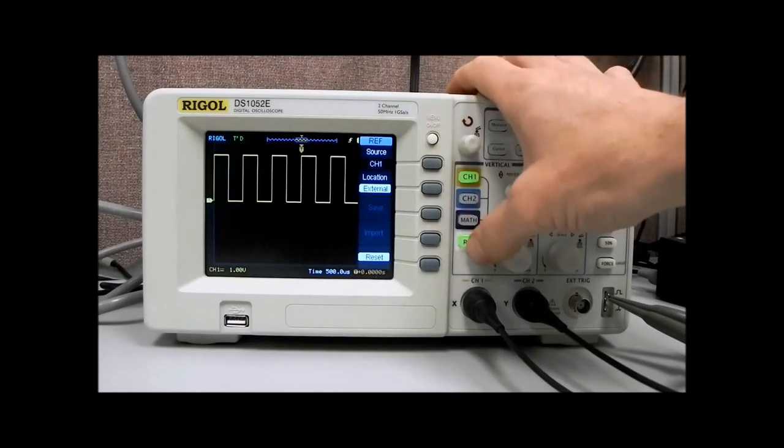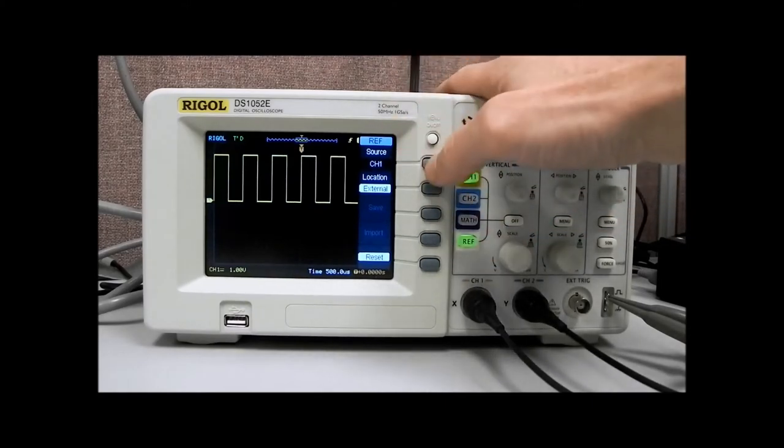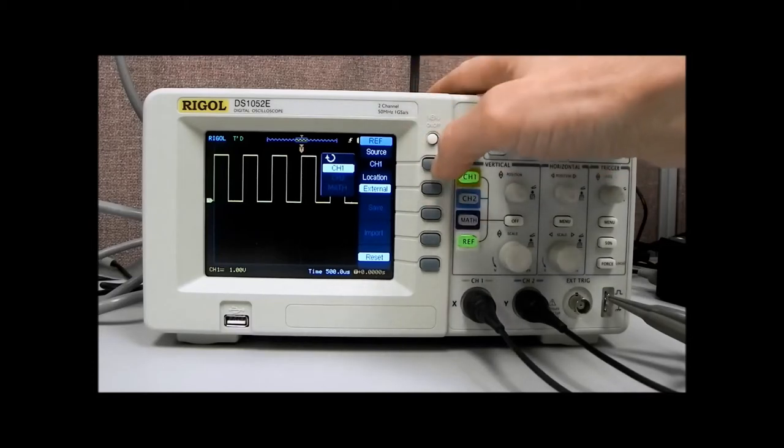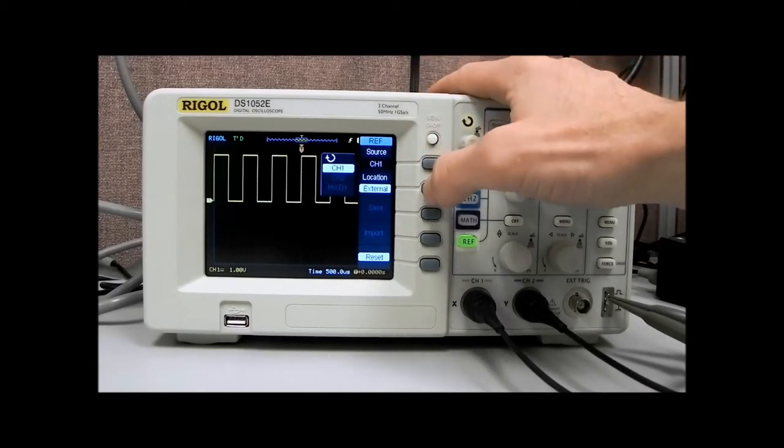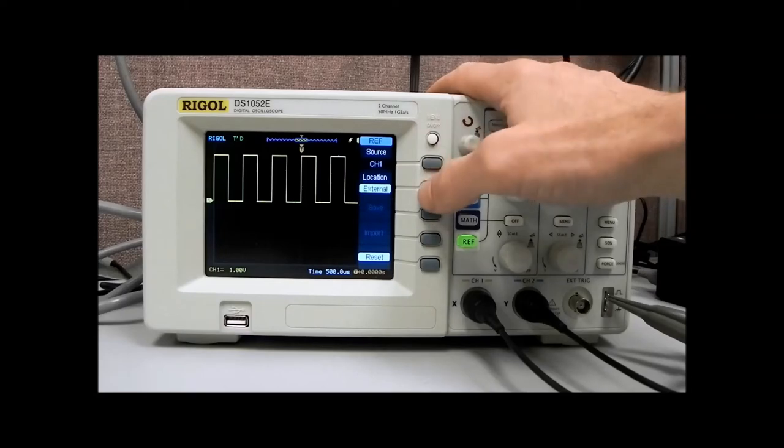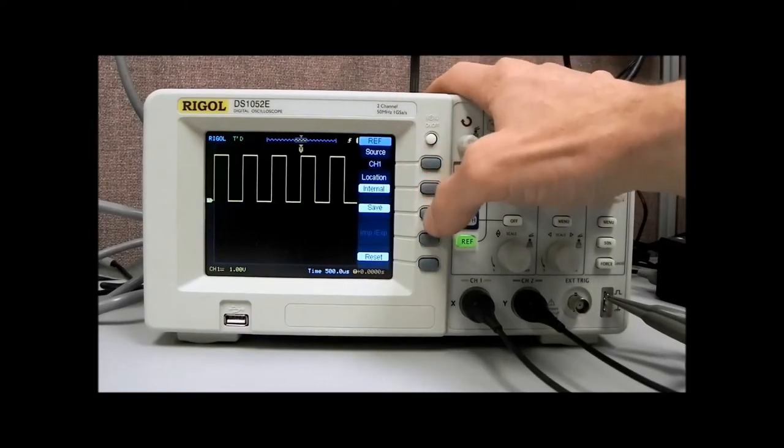What I'd like to do is, I press the reference, I'm going to actually grab a reference here, and you can select between channel 1 and channel 2, as long as channel 2 has been enabled, or math. Now we're going to stick with channel 1, now let's do internal, and let's hit save.